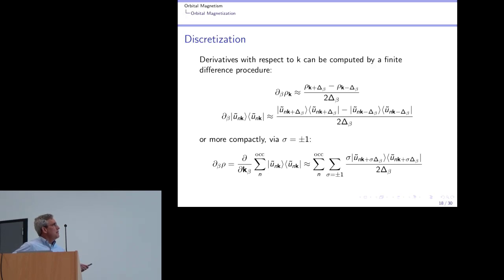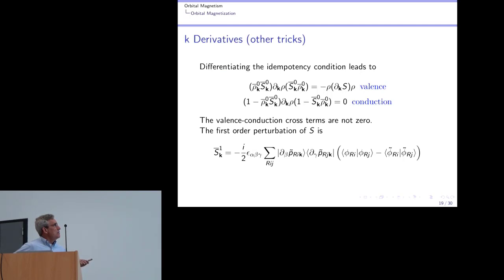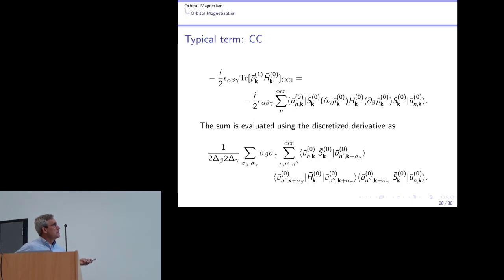You need to have an estimate for the derivative of the density operator. So we did this by finite differences. You can play around with the projections and massage the formulas into slightly simpler forms. And then you end up with programming all the various terms of the curls. And these are what they look like.